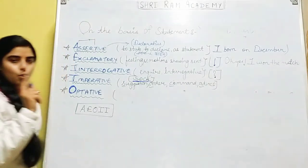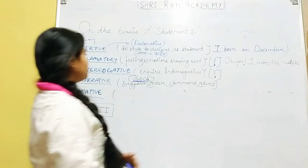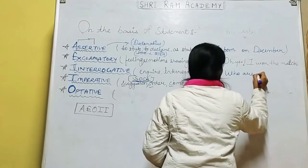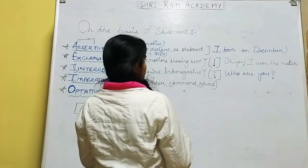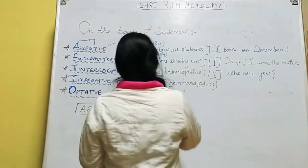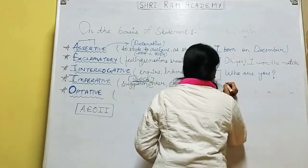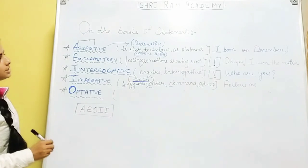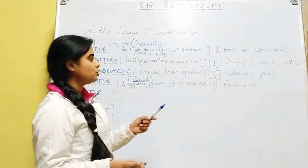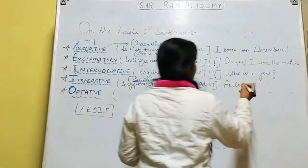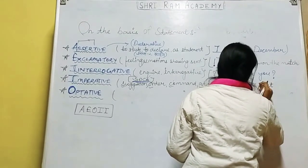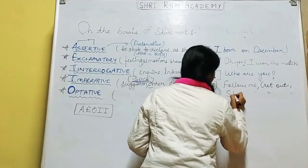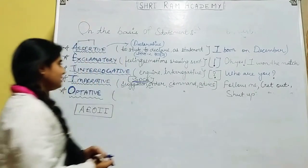SOCA means: Suggestion, Order, Command, and Advice. Whenever there is suggestion, order, command, or advice in a sentence — those are imperative sentences. For example, 'Follow me' — यह एक order हो गया. जैसे army में captain कहता है 'Follow me.' 'Get out' — यह भी order है. 'Shut up' — यह भी order है. तो यह जो sentences हैं, यह orders होते हैं.